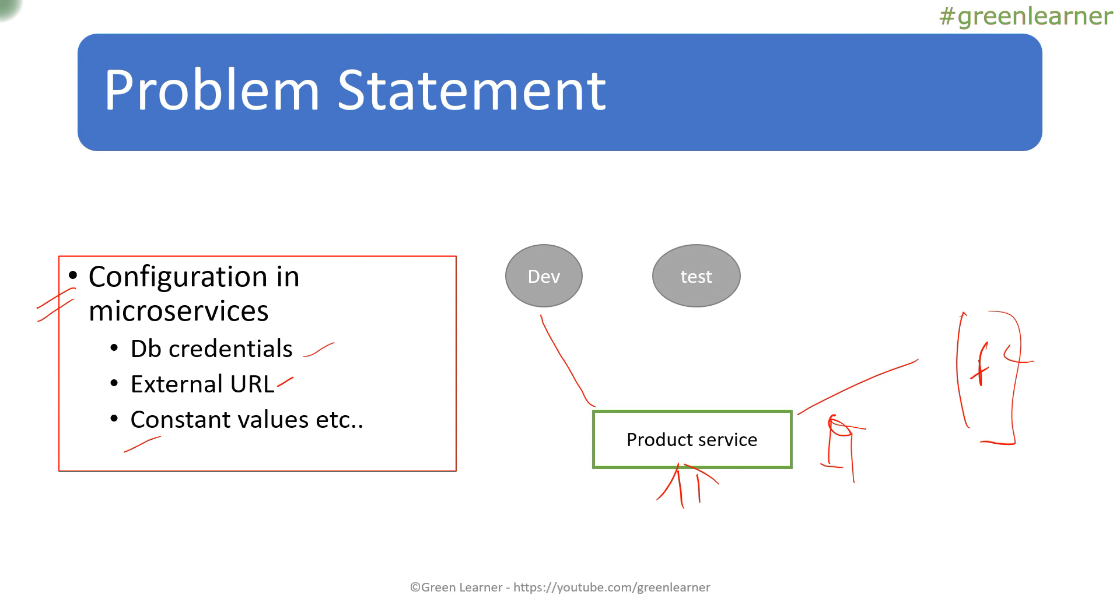When development is complete, it will be going into the test phase. In the test phase, I have to change those DB credentials because that is going to change. With the help of properties and YAML file configuration, I can do that without doing any change in the code. And then after testing, it is going to be in the production. In the production, everything is going to be different. This configuration like DB credentials, external URL and constant value.